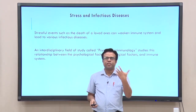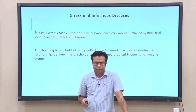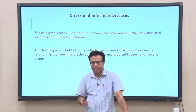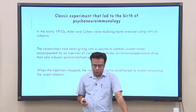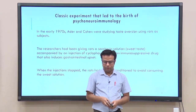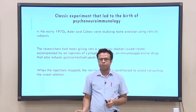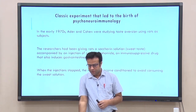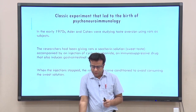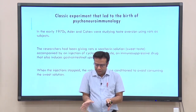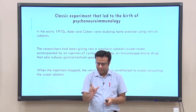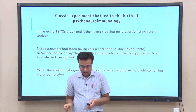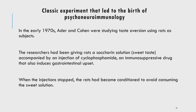Interestingly, the birth of the whole area of research called psychoneuroimmunology was the result of an accidental research finding. In the 1970s, Ader and Cohen were doing an experiment on classical conditioning, studying taste aversion using rats as their subjects. Before we can understand this research, let me give a brief introduction of classical conditioning so you will understand what their research is about and how it led to the birth of psychoneuroimmunology.